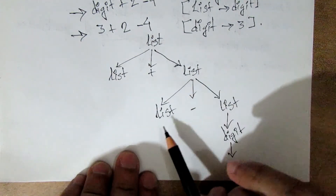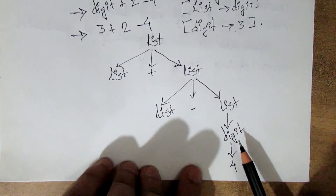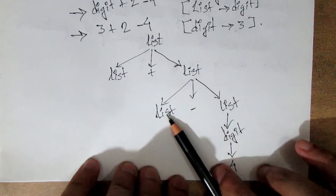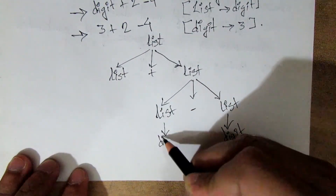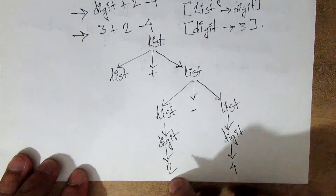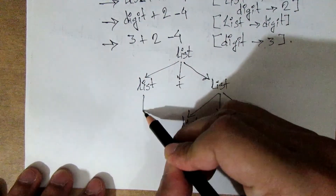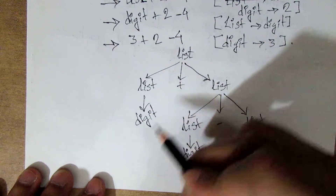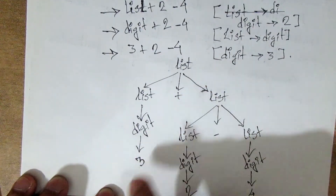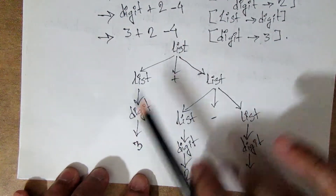In the second line, the list implies list-list, so the rightmost non-terminal is done with this terminal. List implies digit, and digit implies 4. So 4 and minus 2 are changed. So the list is digit. The list implies 2. The list implies 3. So 3 is the terminal. In all the other parts, 3 is the terminal. So 3 plus 2 minus 4 is the string.